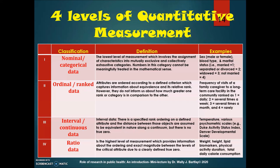In nominal data, one is not greater than four — it is simply a way of organizing data. Ordinal rank data have defined criteria that capture information about equivalence and relative rank; however, they do not inform us about how much greater one rank is compared to another. For example, the frequency of visits of a family caregiver to a long-term care facility, ranked as one (daily), two (several times a week), three (several times a month), or four (rarely).